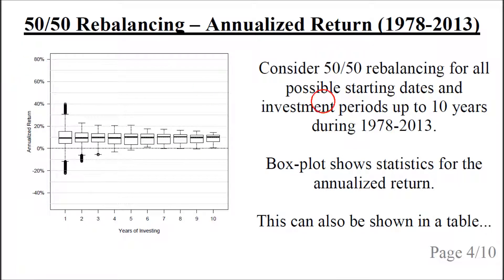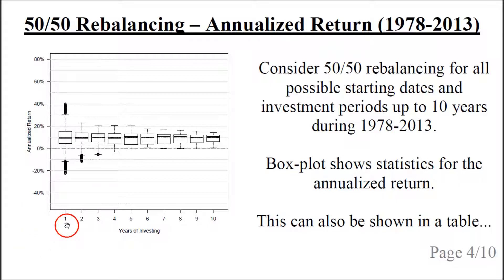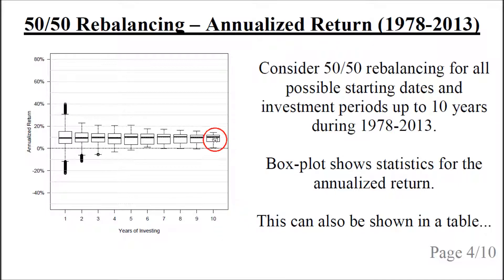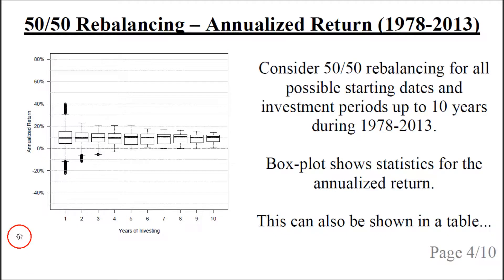If we consider all possible starting dates during the period 1978 to 2013 and all investment periods up to 10 years, we get many thousands of different combinations. We can summarize the annualized returns using a box plot. For one year of investing, the median annualized return would be almost 10%, the lowest would be around minus 22%, and the highest around plus 40%. For a 10-year investment period, the median annualized return would be about 11% and there would be no losses. We can also show this data in a table.